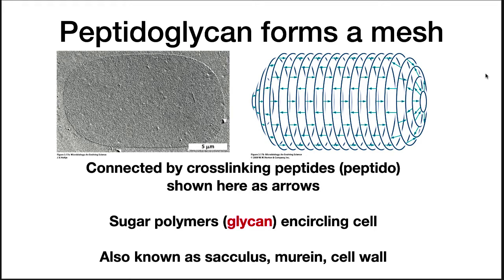Note that this is not a permeability barrier. The name of the molecule comes from its composition: peptido for the peptide crossbridges and glycan for the sugars in the backbone. When intact, peptidoglycan is a strong structure capable of withstanding up to 25 pounds per square inch of turgor pressure.